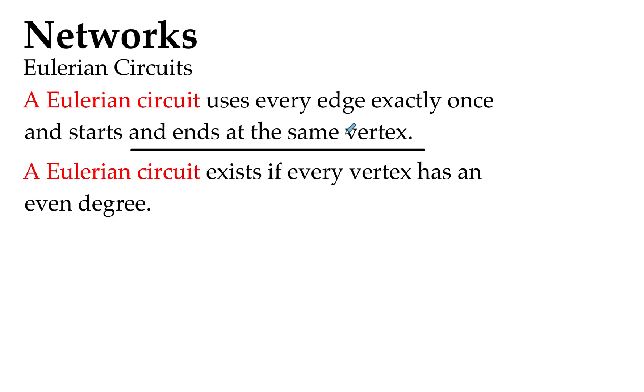OK, so a Eulerian circuit exists if every vertex has an even degree. We'll check that out as well. Let's have a look at an example, some pretty simple examples here, basic examples of a Eulerian circuit. Well, we're going to check whether they're Eulerian circuits anyway.